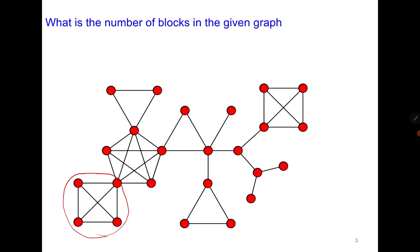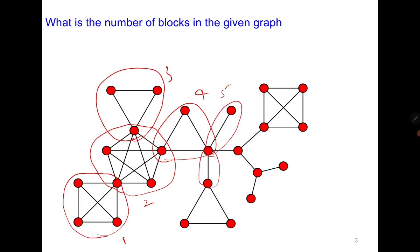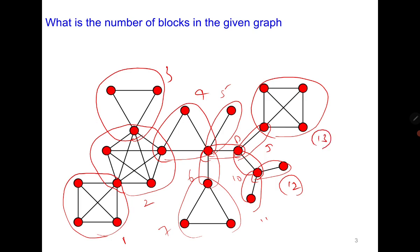This is the first block. You just need to identify the cut vertices and then it's very easy to find the blocks. So the second one, then third one, fourth, fifth, six, seven, eight, nine, ten, eleven, twelve, and thirteen. Clearly there are 13 blocks in the given graph.